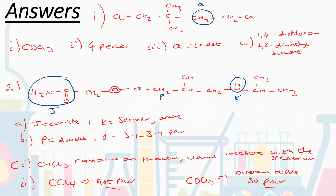For the splitting of the protons labeled A: using the N+1 rule, to the left is a quaternary carbon with no hydrogens, so we look right. There are two hydrogens on the adjacent carbon. N+1 therefore equals 3 — we would see a triplet.